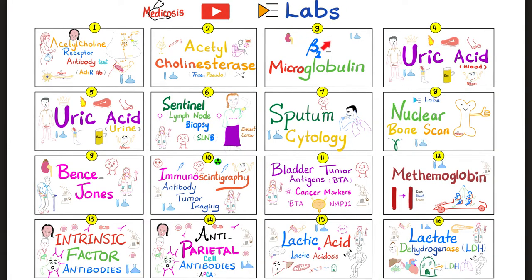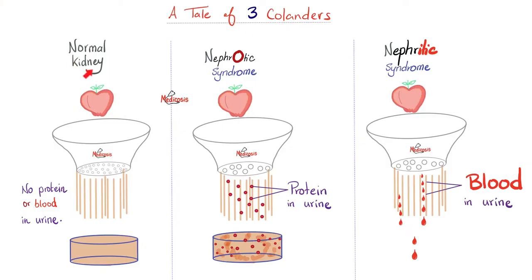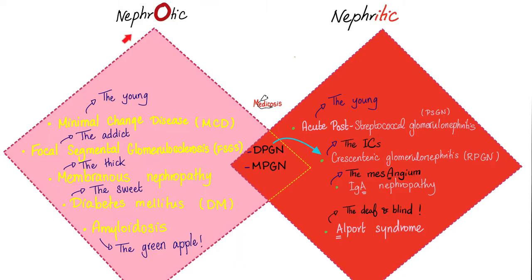Please watch the videos in this playlist in order. Do you remember the story of normal versus nephrotic versus nephritic syndrome? Normally, the kidney should have no protein in the urine and no blood in the urine — that's a good kidney. A kidney with nephrotic syndrome will let protein pass into the urine. A kidney with nephritic syndrome — 'itis' means inflammation — is inflamed and shedding tears of blood, so we see blood in the urine.